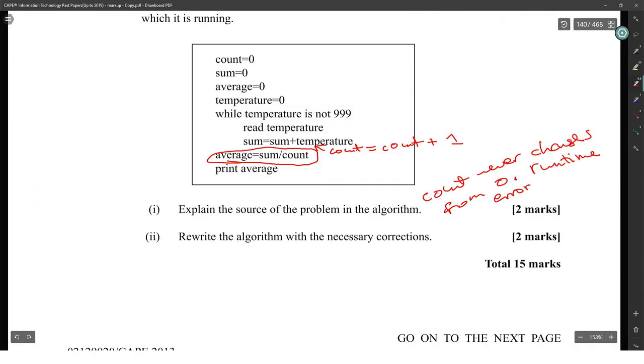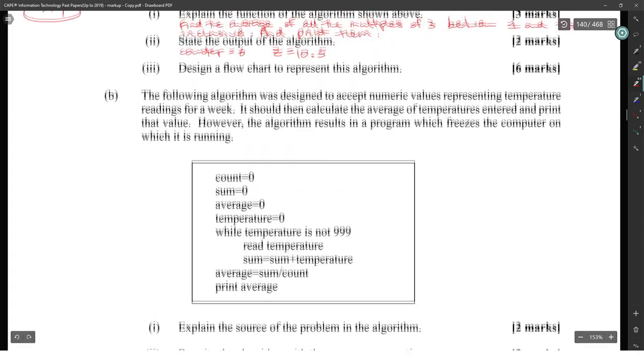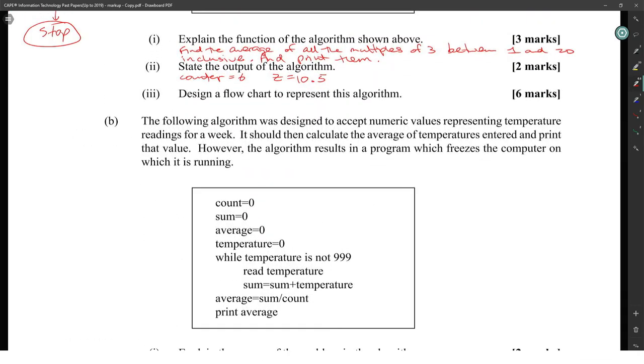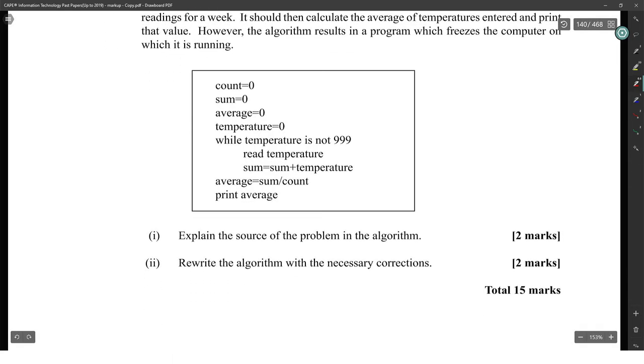Part B: The following algorithm was designed to accept numeric values representing temperature readings for a week. It should then calculate the average of temperatures entered and print the value. However, the algorithm results in a program which freezes the computer on which it is running. Explain the source of the problem. The source of the problem is: why is it causing it to freeze? We set all these things to zero. While temperature is not 999, it'll read the temperature from the user, add that up, and once you send 999, sum divided by count. Count is zero. The value of count never changes from zero, so you have a runtime error.